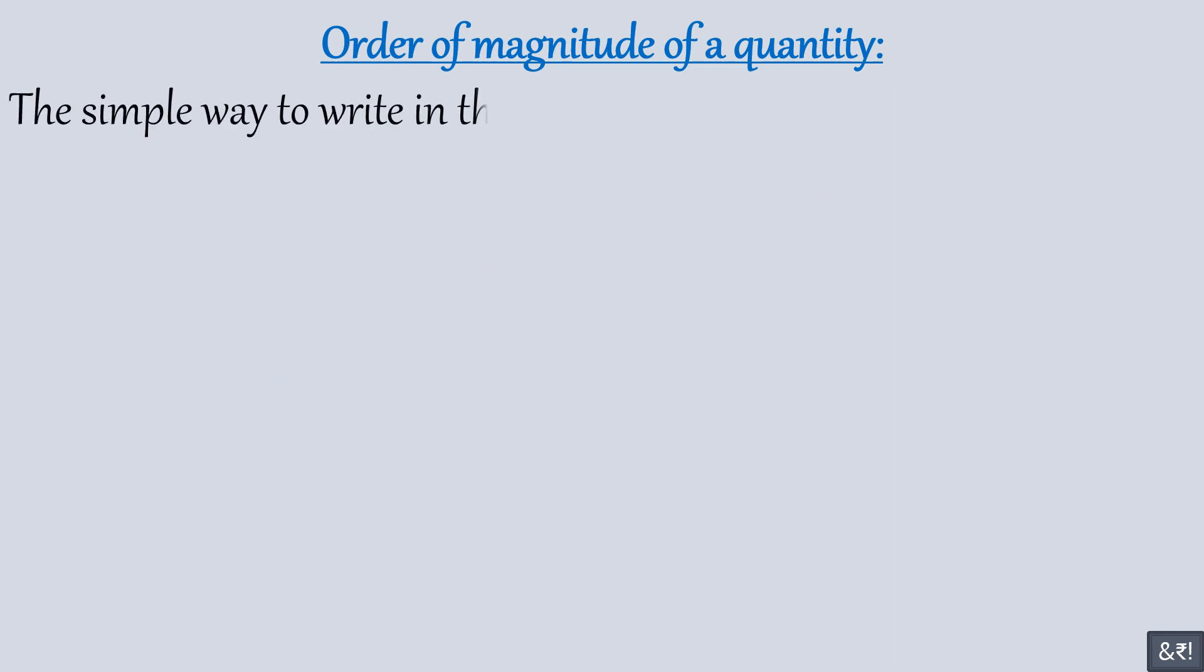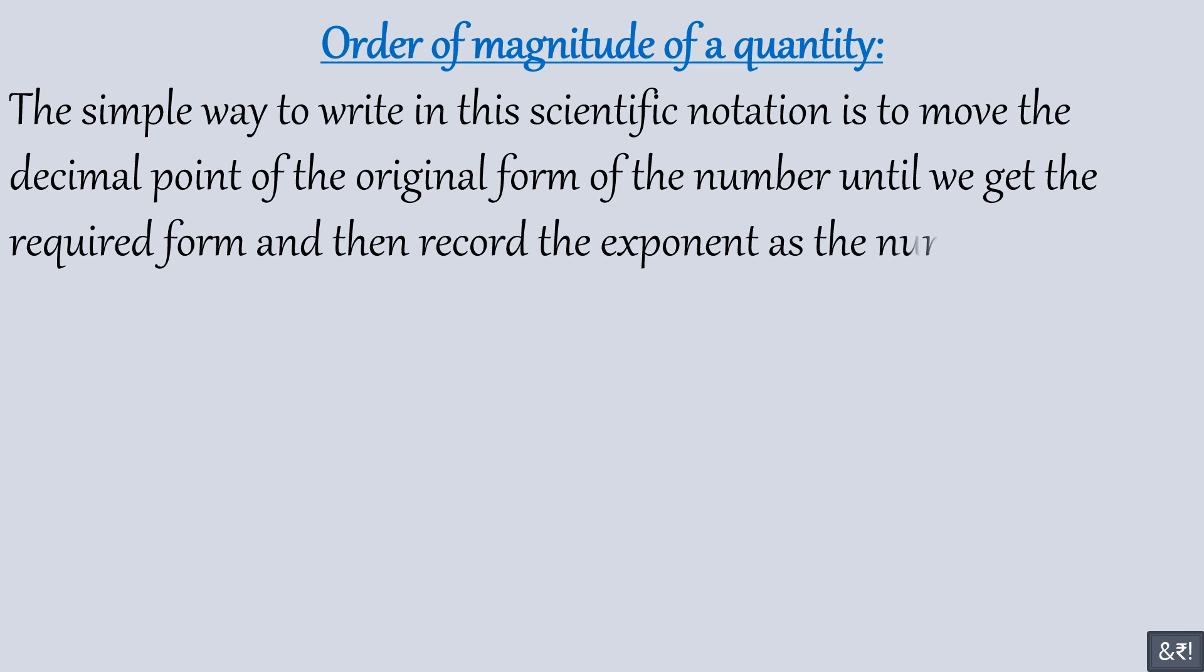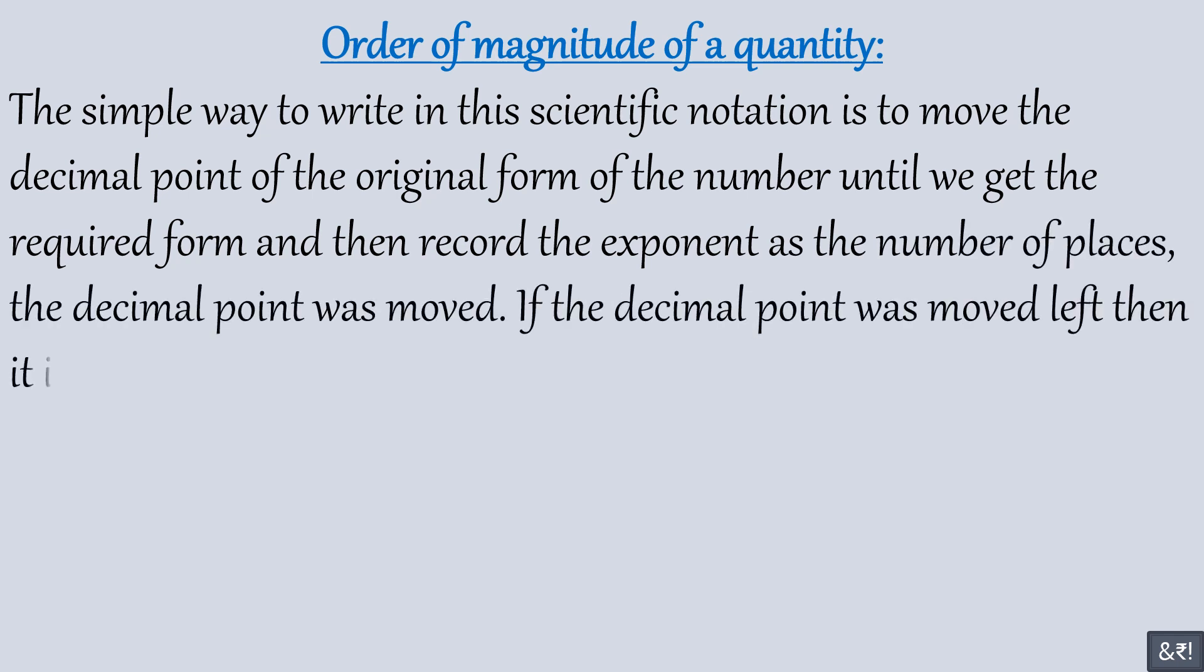The simple way to write in this scientific notation is to move the decimal point of the original form of the number until we get the required form, and then record the exponent as the number of places the decimal point was moved. If the decimal point was moved left then it is positive, and if moved right then it is negative.